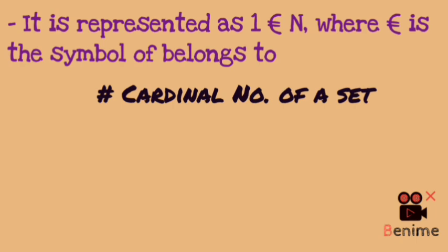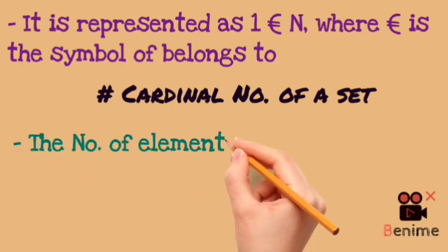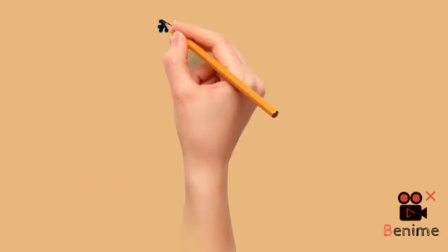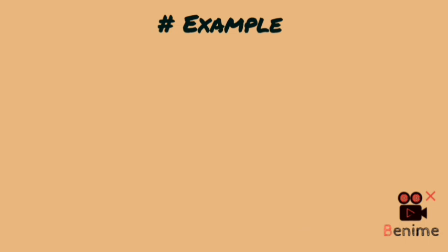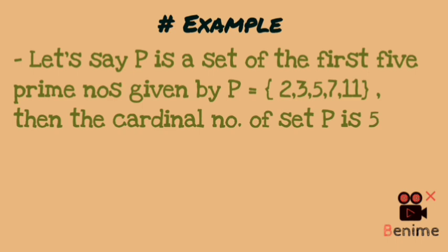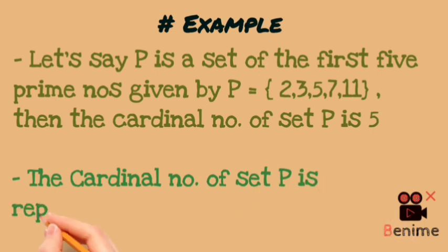Now we will call the cardinal number of a set. The cardinal number of a set means the total number of elements found in that set. For example, I have a set of the first five prime numbers: P = {2, 3, 5, 7, 11}. How many elements are there? Five. So 5 is the cardinal number of set P.